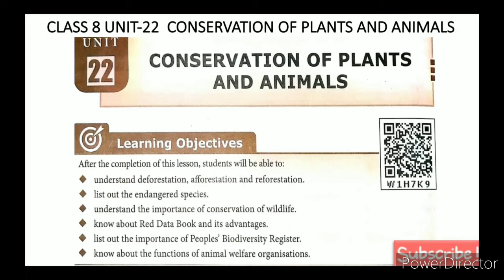Conservation of Plants and Animals. The learning objectives are: understand deforestation, afforestation and reforestation; list out the endangered species; understand the importance of conservation of wildlife; know about the red data book and its advantages; list out the importance of people's biodiversity register; know about the functions of animal welfare organizations.